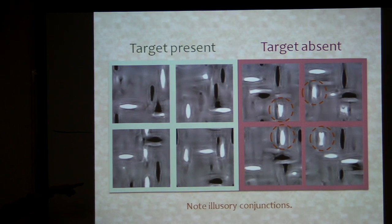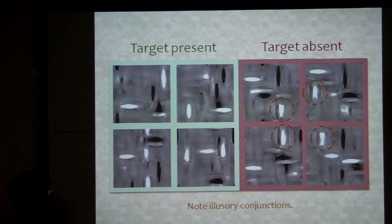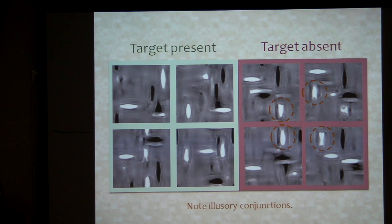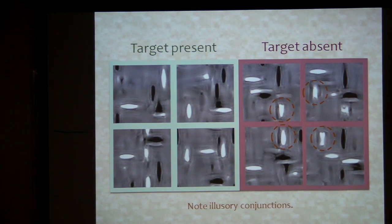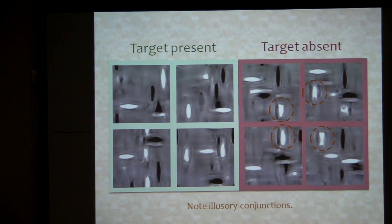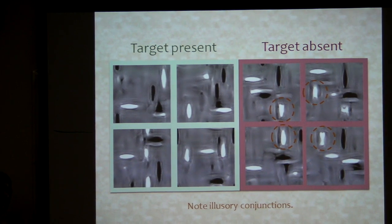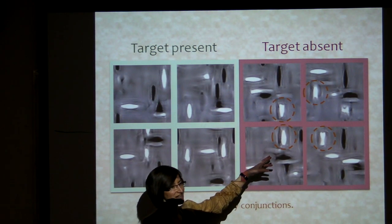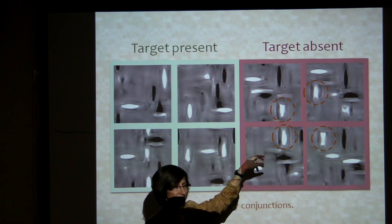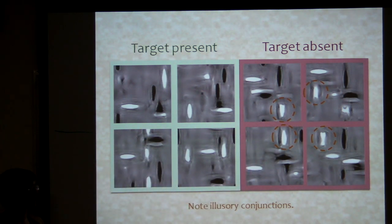This is important because one of the main things you've got to predict if you're going to convince search people that you have a real model is illusory conjunctions. And here they just sort of pop out of the statistics for completely other reasons. These conjunctions only actually appear once you've done the synthesis. We're not necessarily suggesting that the visual system does the synthesis, but we are at least suggesting that there's an ambiguity in the statistics about whether or not these target-absent things had a white vertical. Based on that ambiguity, your visual system might guess that there was a white vertical.